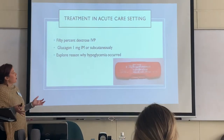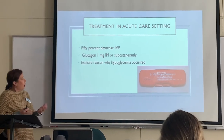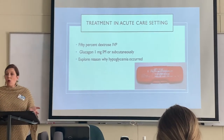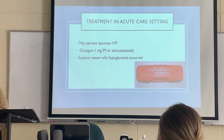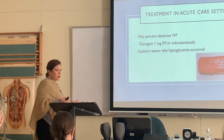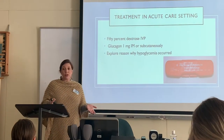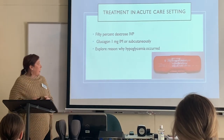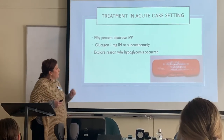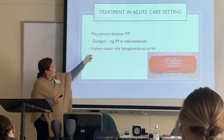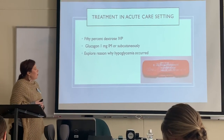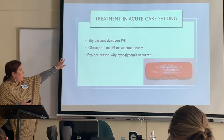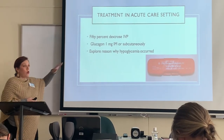If our patient is in the facility and is not awake or conscious, the Rule of 15 is not appropriate — we can't give food to an unconscious patient, as that risks other complications. In that case, we can give 50% dextrose IV push, or glucagon 1 milligram IM or sub-Q. Then we explore the reasons why the hypoglycemia occurred, whether treatment was given by IV or by the Rule of 15.